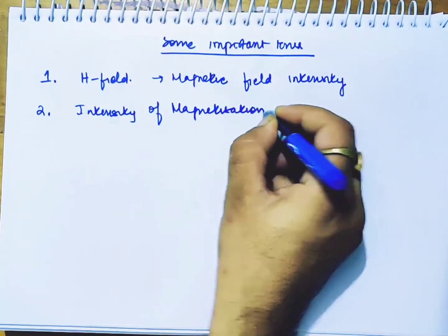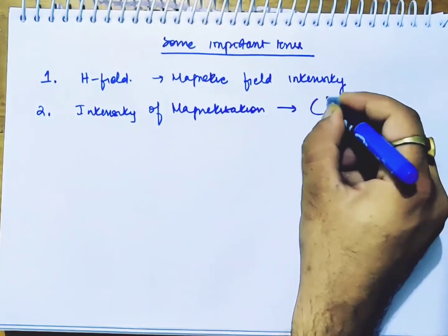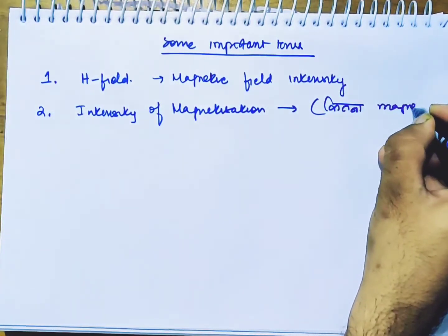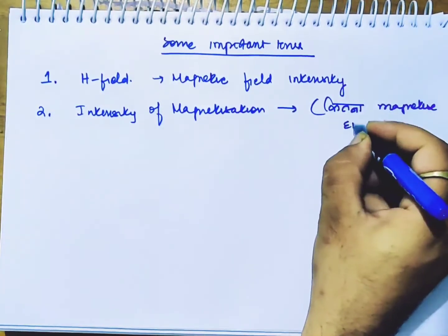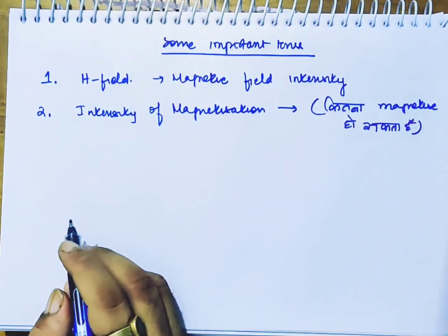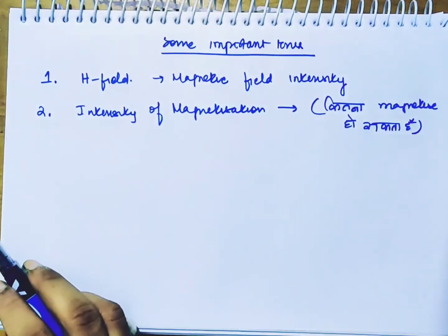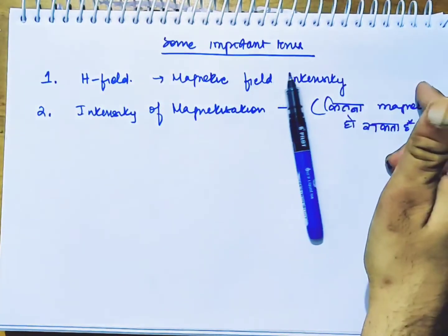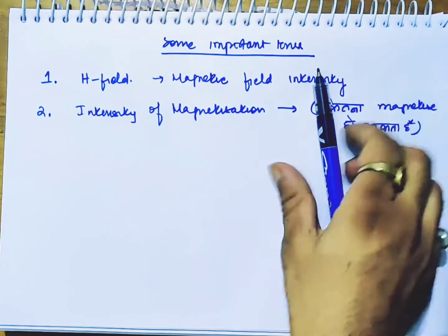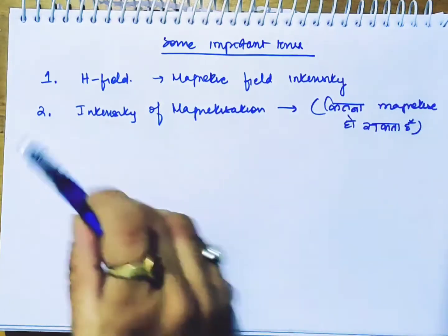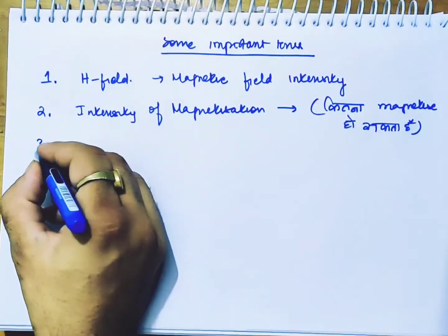What does it mean? What is it called? How much can a material be magnetized to create a magnet? This is the intensity of magnetization. Number 3.